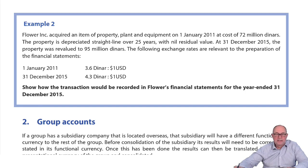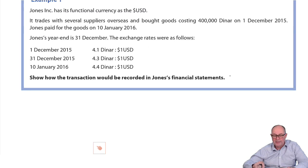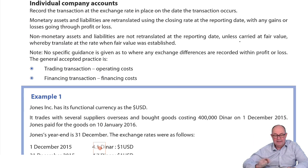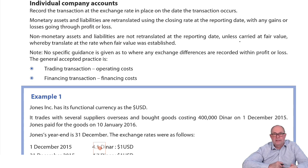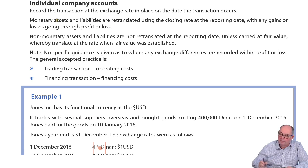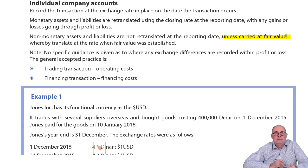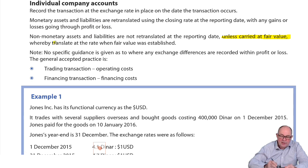We're going to look now at example two. When we talked about the rules for translation of transactions, we said that at the end of the year, monetary assets are retranslated, non-monetary assets are not retranslated, but there was an exception. The exception was if the non-monetary asset — that could be PPE or inventory — is carried at fair value, then there would be a process of retranslation.